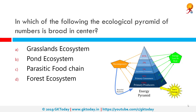In which ecosystem is the ecological pyramid of numbers broad in the center? It is broad in the forest ecosystem. A pyramid of numbers shows the number of individual organisms at each trophic level in an ecosystem. If there are more decomposers than producers it would be an inverted pyramid. In the case of a forest, it is a spindle-shaped pyramid where the center is wider than both the top and the bottom.